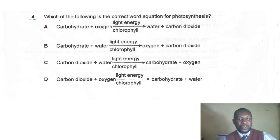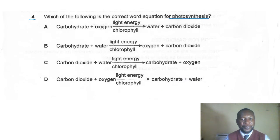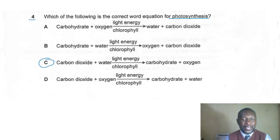Question four: which is the correct word equation for photosynthesis? Is it A, carbohydrates react with oxygen; B, carbohydrates react with water; C, carbon dioxide reacts with water in the presence of light energy and chlorophyll to produce carbohydrate and oxygen; or D, carbon dioxide reacts with oxygen? The correct answer is C.